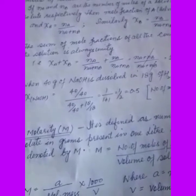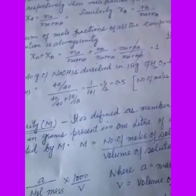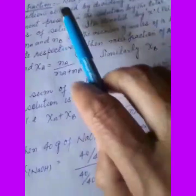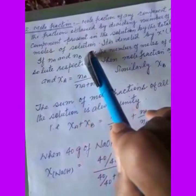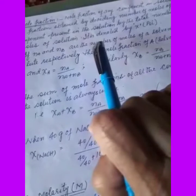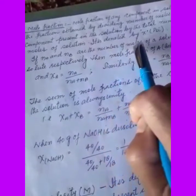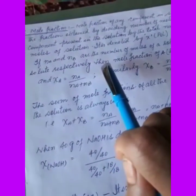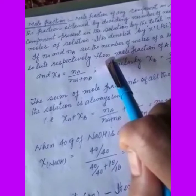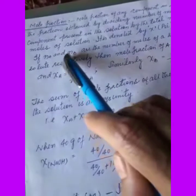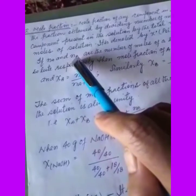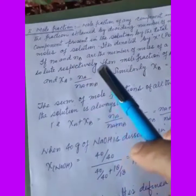The second important unit of concentration is mole fraction. Mole fraction of any component in a solution is the fraction obtained by dividing the number of moles of the component present in the solution by the total number of moles of solution. It is denoted by the Greek letter χ (chi/psi). For a binary solution consisting of a solute and a solvent, if the number of moles of the solvent is nA and number of moles of the solute is nB, then the total number of moles is nA plus nB.